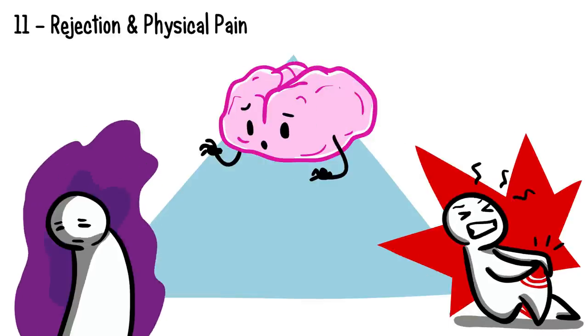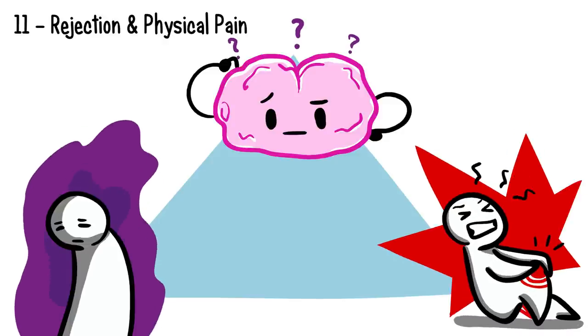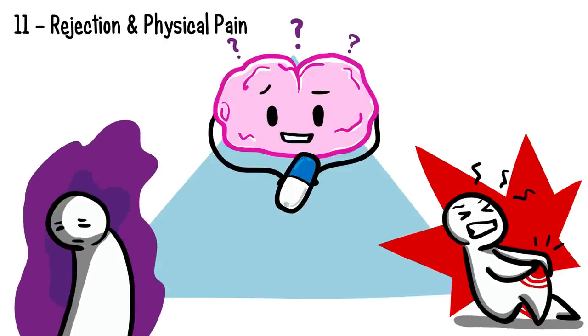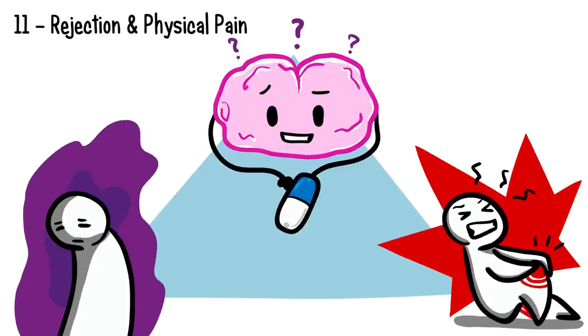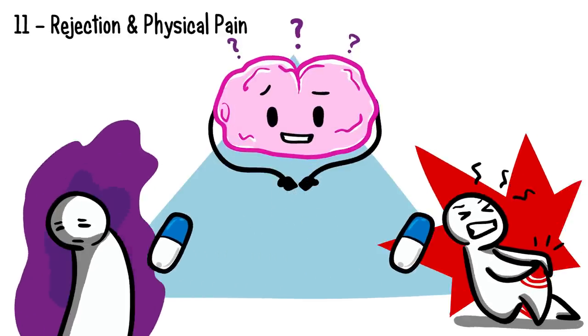Fact number eleven: rejection and physical pain. Have you ever wondered why the brain can't differentiate rejection from physical pain? Although the brain processes physical pain and emotional pain differently, it can't discriminate between the two. This is because the brain releases the same natural pain-killing chemical when a person is shunned or physically hurt, therefore confusing the brain.